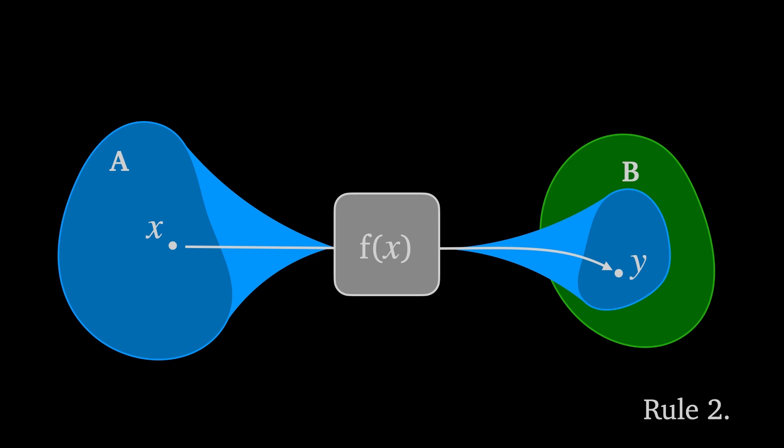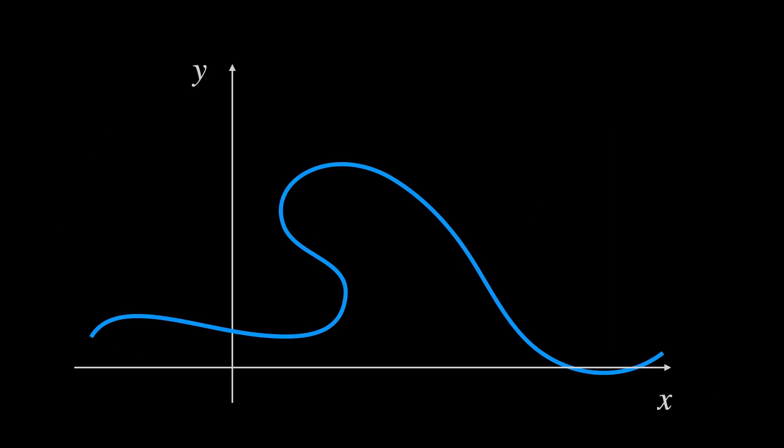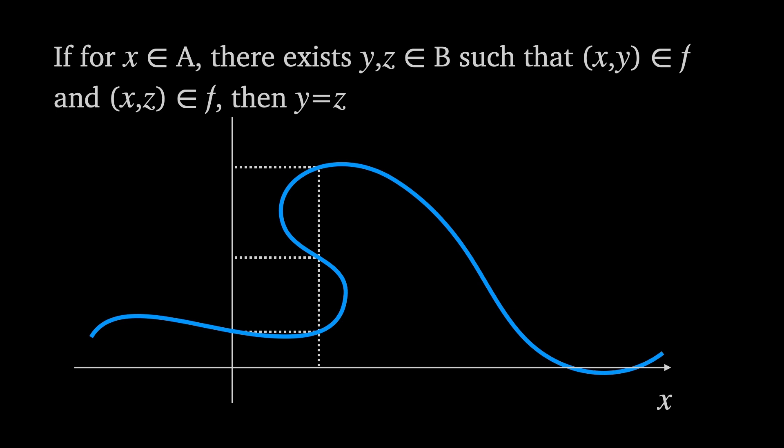By rule two we also prevent a single value from the domain a be mapped onto two distinct values y and z in the co-domain b. This prevents us from allowing cases such as this with multiple values. Again if for a given x there exists y and z such that xy in f and xz in f then y is equal to z.